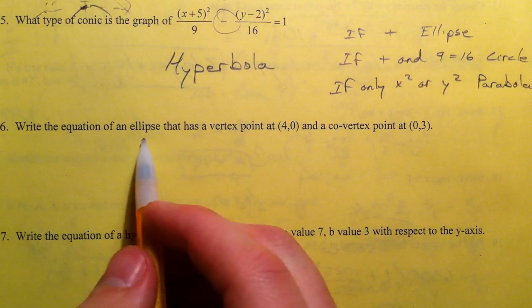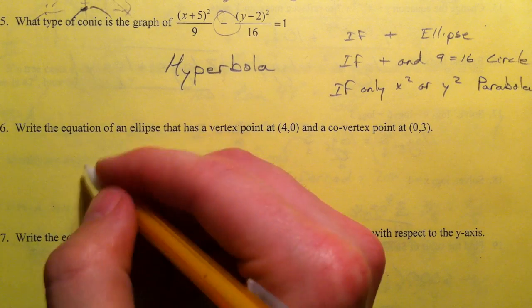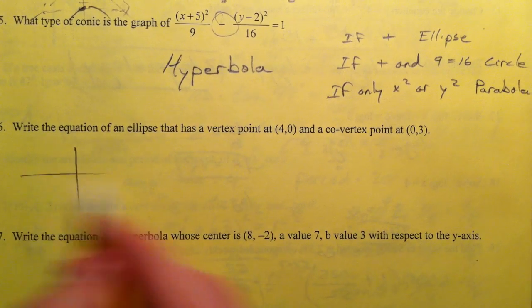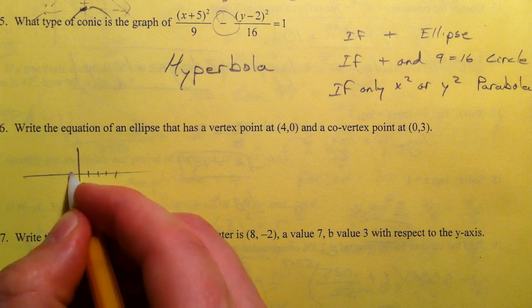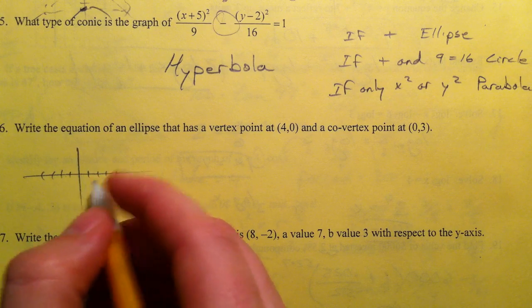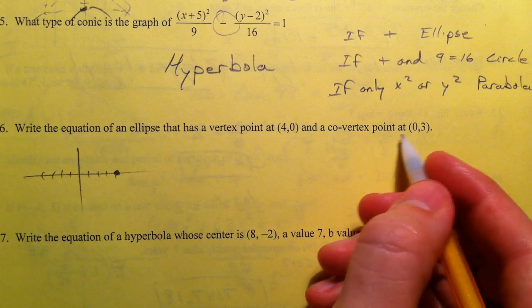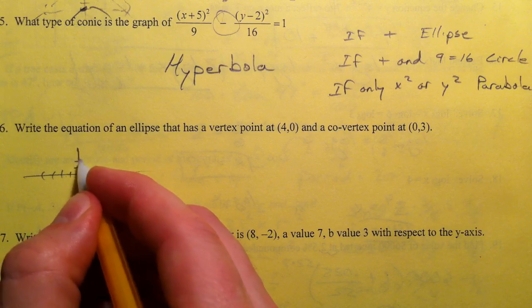Write the equation of an ellipse that has a vertex at 4, 0 and a co-vertex at 0, 3. Now, we're going to go on the assumption that it's centered at 0, 0.